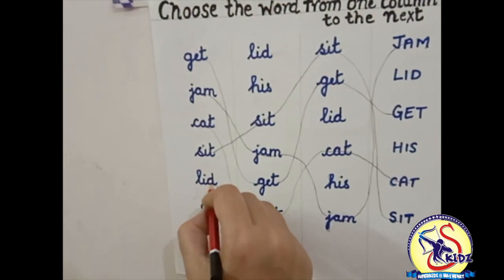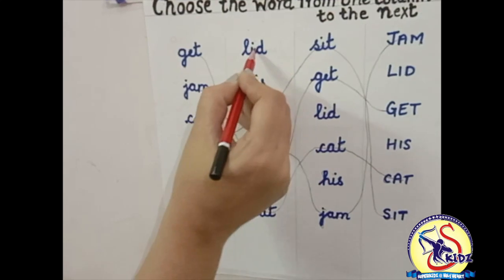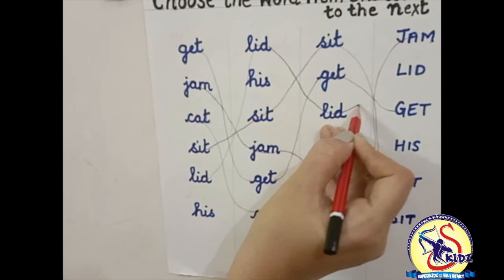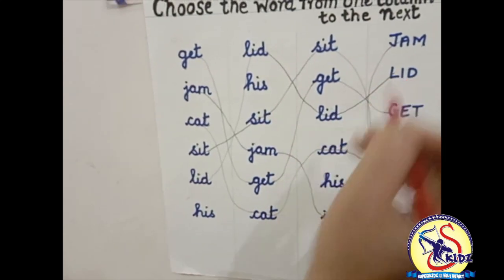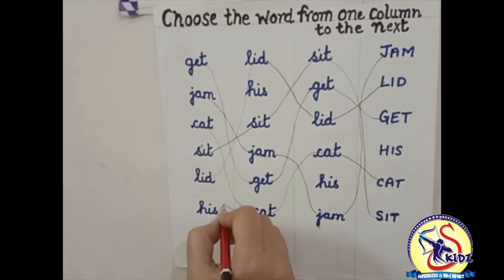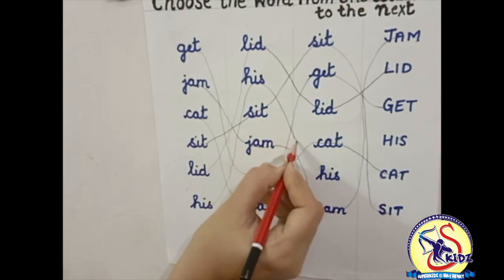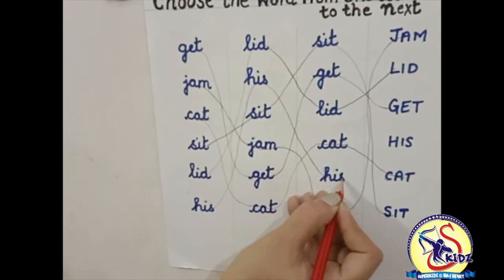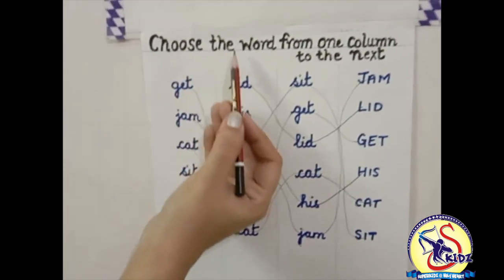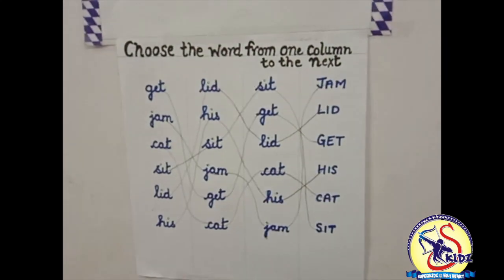Our next word is lid — let's match the word lid. Lid, lid, lid. And our next word is his. His, his, and his. This is our exercise: choose the word from one column to the next. Thank you students, have a nice day.